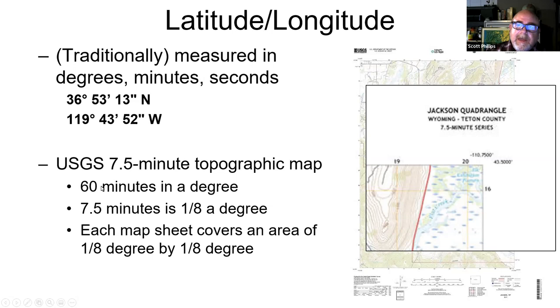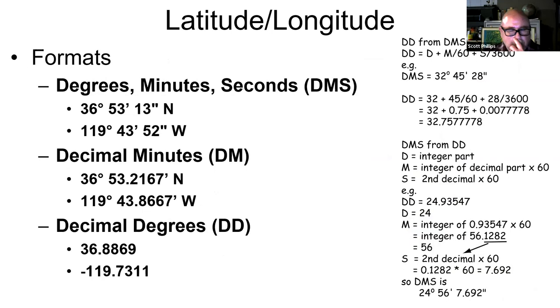Remember there's 60 minutes in every degree. If you divide that by half it'd be 30, and a quarter of 60 would be 15, and then an eighth of 60 would be 7.5. So 7.5 minutes is one-eighth of a degree. What that means is that each one of these maps covers an area that's one-eighth of a degree in longitude by one-eighth of a degree in latitude.